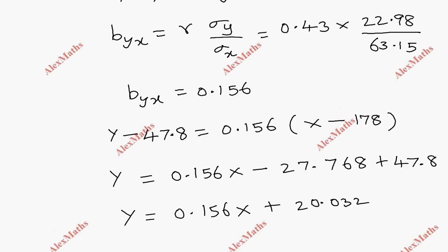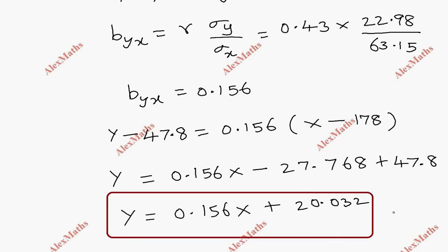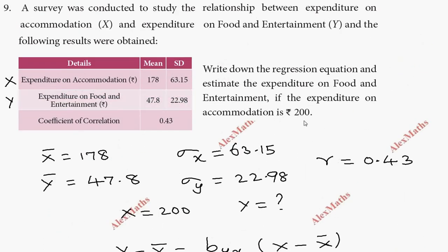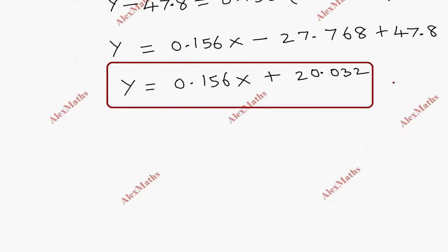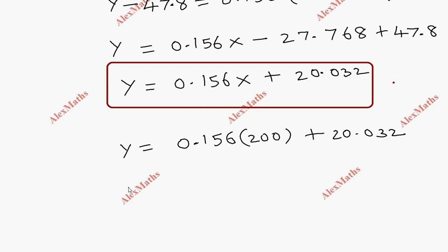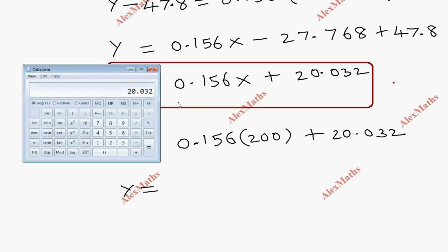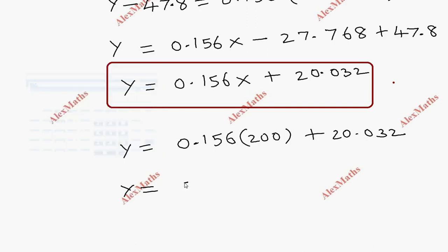This is our regression equation. Now substituting x equal to 200: y equals 0.156 into 200 plus 20.032, so y equals 31.2 plus 20.032, giving y equal to 51.232. The estimated expenditure on food and entertainment is 51.232.